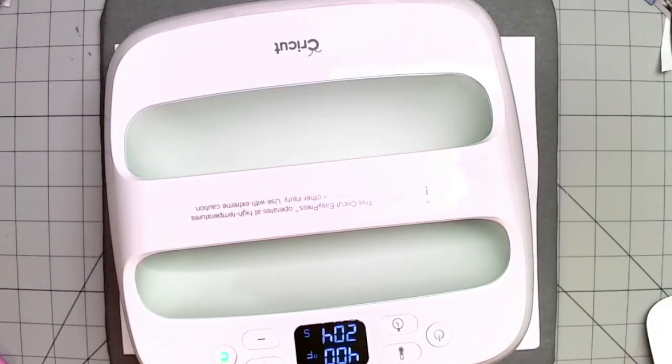Now Cricut does suggest that you use a piece of butcher paper. I unfortunately didn't have any butcher paper, so I just used another piece of copy paper and it seemed to work just fine. So now we're just kind of fast forwarding through the process. The temperature setting that is recommended from Cricut with the Easy Press 2 is 400 degrees Fahrenheit for 240 seconds.